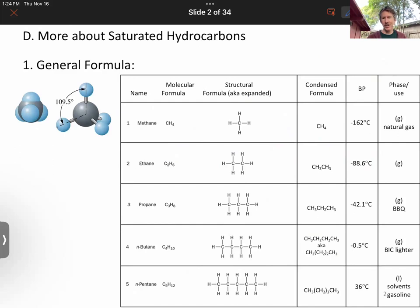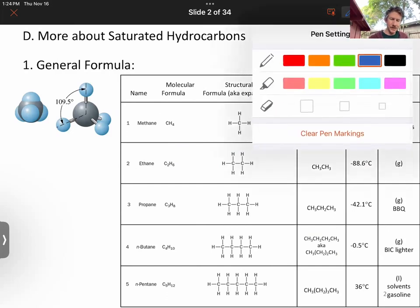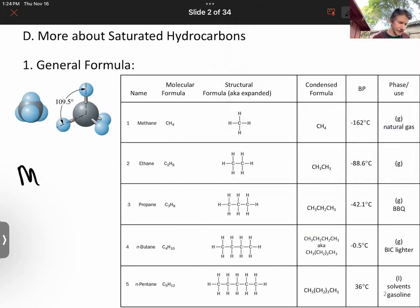More about saturated hydrocarbons. You do have to memorize all these, meaning that one carbon is meth for methane, eth, prop, but, pent for one, two, three, four, and five carbons. We've got our Lewis structures there, our condensed formula that we were just talking about, our boiling points, and some uses of them in their phases.